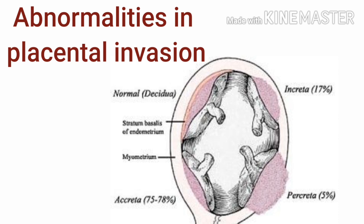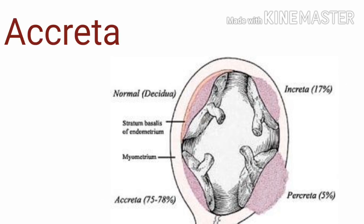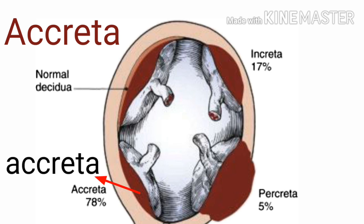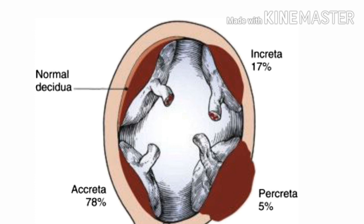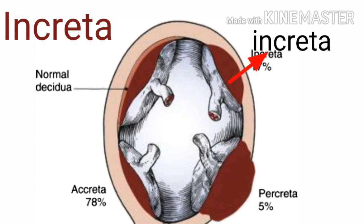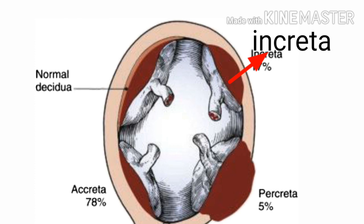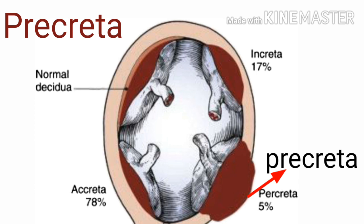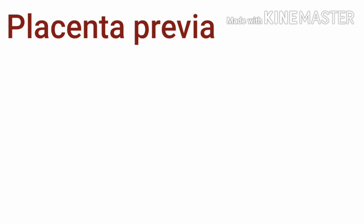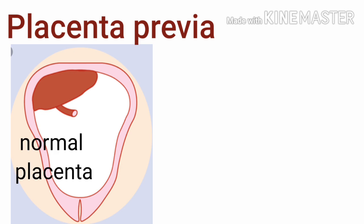Next we see abnormalities in placental implantation. There are three types: placenta accreta, increta, and percreta. Placenta accreta is the most common and occurs when the placenta grows too deeply into the uterine wall. In placenta increta, the placenta attaches to the myometrium, which is the muscular middle layer of the uterus. In placenta percreta, the placenta invades the perimetrium and may also extend to the wall of the urinary bladder or the rectum.